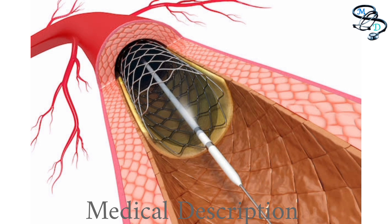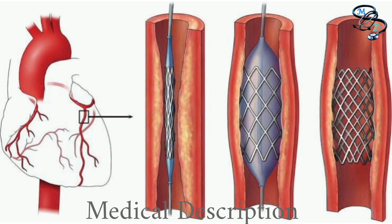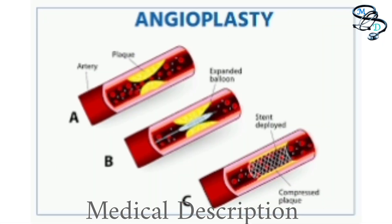During angioplasty, the doctor threads a tiny deflated balloon attached to special tubing through an artery — generally in your groin — to the narrowed coronary artery, then inflates the balloon to widen the artery. A small metal stent may then be inserted to keep the artery open. The procedure can take 30 minutes to several hours, with an overnight hospital stay, and you can generally return to normal routine soon after.